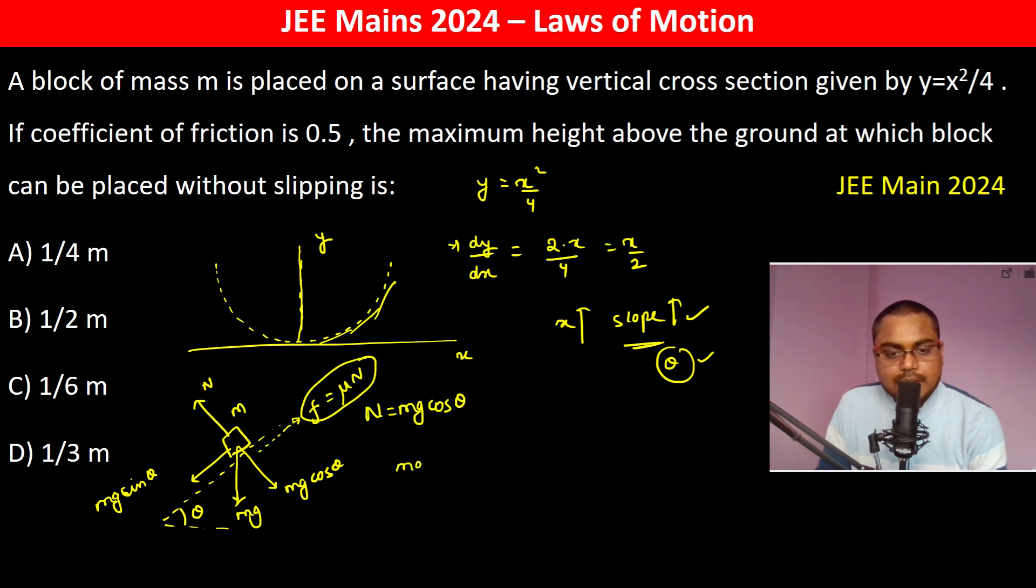what is going to happen is mg sin theta should be equal to mu mg cos theta. So therefore mg cancels, tan theta should be equal to mu.